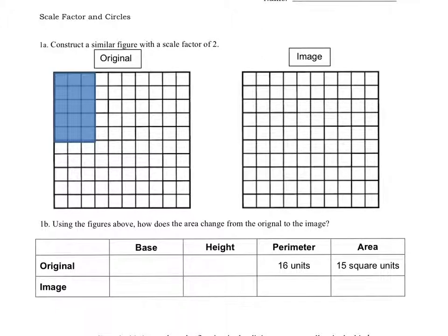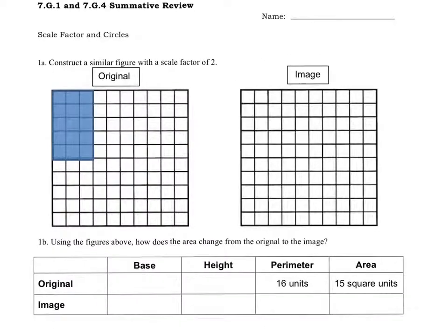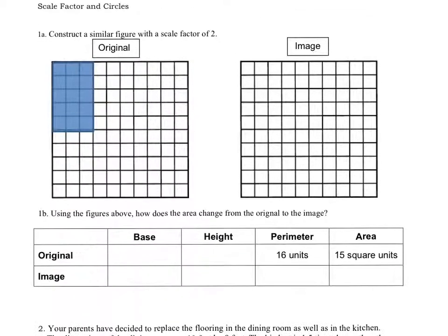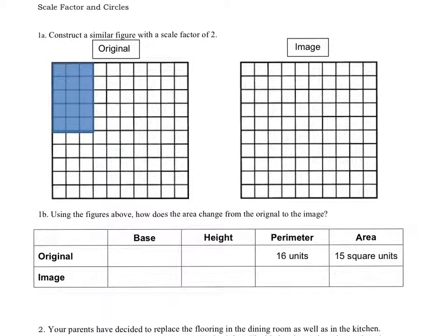First, it says to construct a similar figure with a scale factor of 2. Before we can make a factor of 2 to the sides, we have to first figure out what the sides are. This rectangle has a side of 5 by a side of 3. When it says a scale factor of 2, we're going to multiply by 2 to both sides.